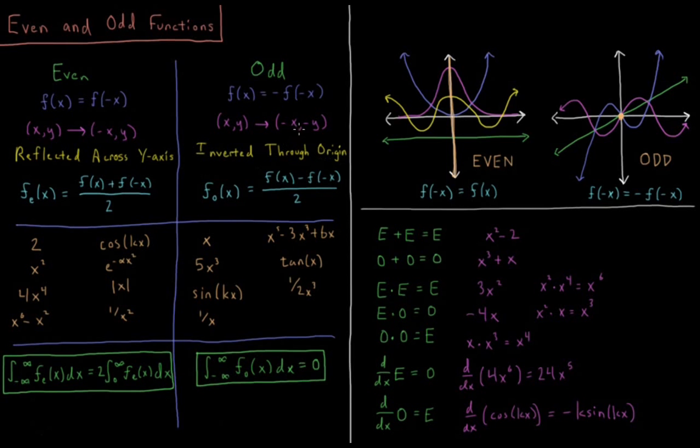The symmetry operation which relates these two points would be inversion through the origin. So all these points here, this is the origin, and we invert through the origin to the other side of it, and we always find a corresponding point at (-x,-y).